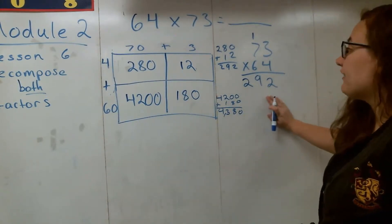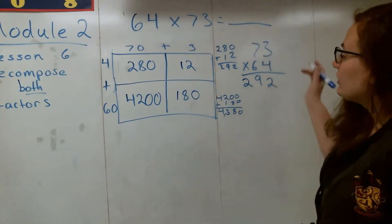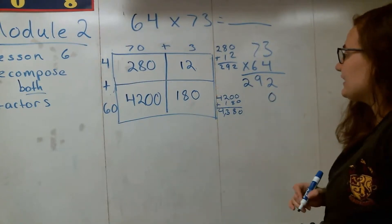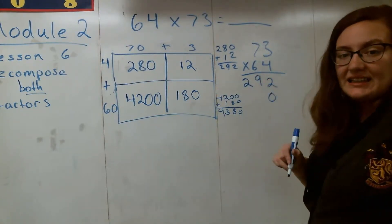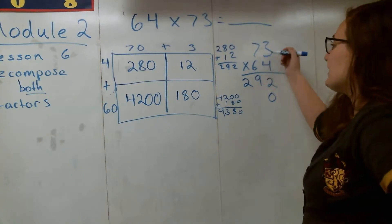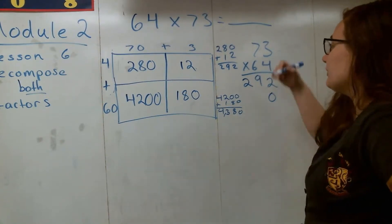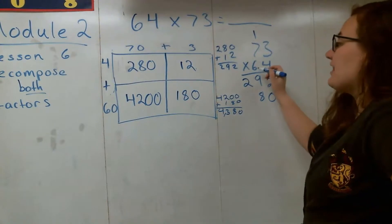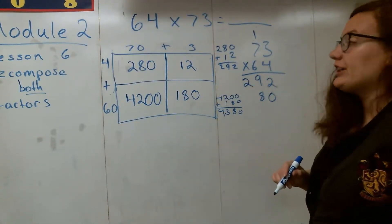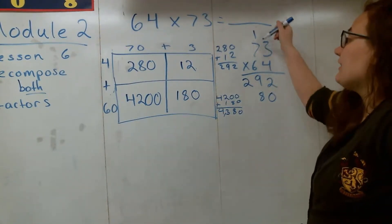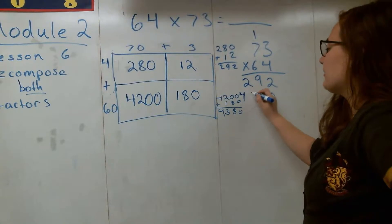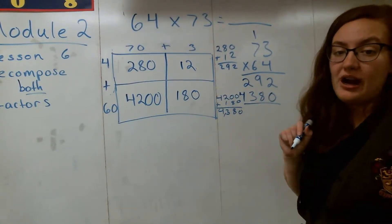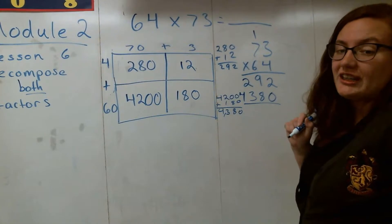Over here in the standard algorithm, I need to start multiplying. Remember, I have to add this zero here because the 6 is in the tens place. So I do 6 times 3, which is 180 — carry the 1, leave the 8. Then I do 6 times 7, which is 42. And 42 plus 1 gives me 43. And again, I get that partial product of 4,380.